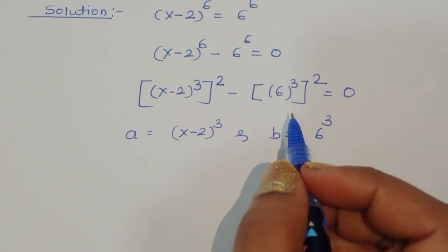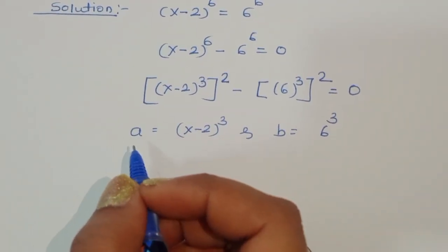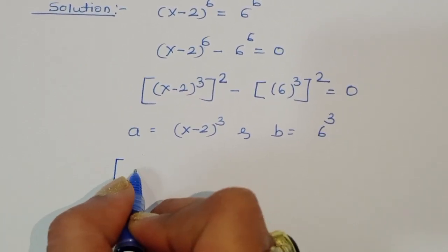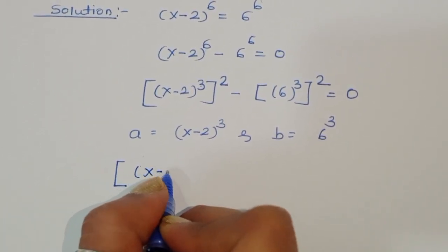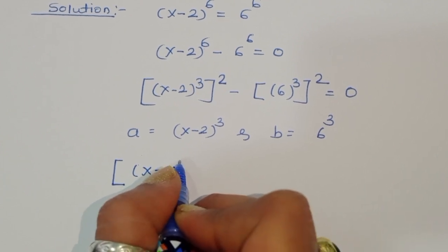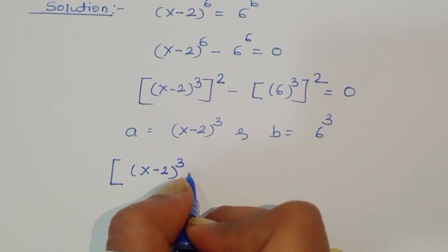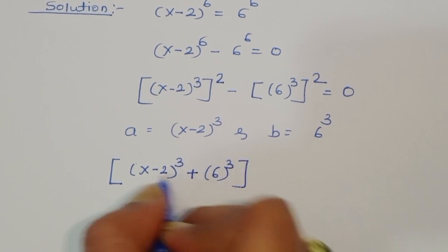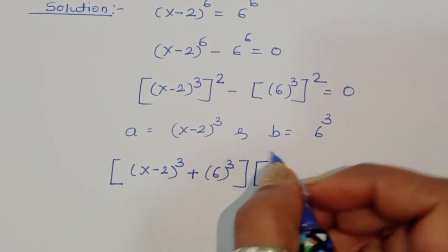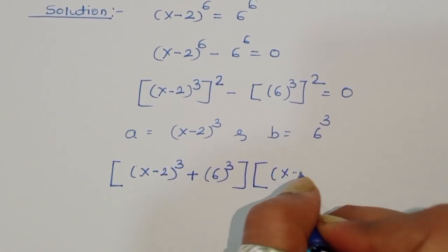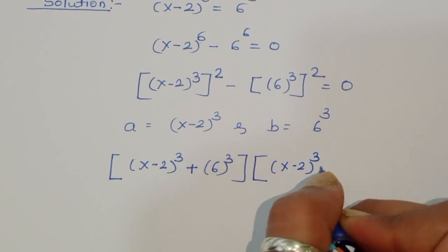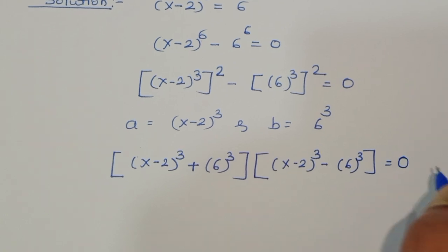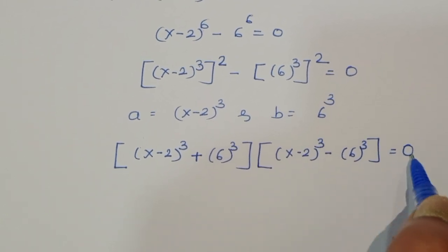So we write this in the form (a plus b)(a minus b): a is (x minus 2)^3, so (x minus 2)^3 plus 6^3, times (x minus 2)^3 minus 6^3, is equal to 0. This is the (a plus b)(a minus b) form equal to 0.